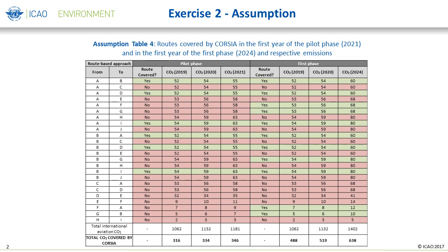Just as in the first exercise, there are only ten states in the CORSIA world, states A to J, along with the combination of international routes and routes which are covered by CORSIA or not, along with the levels of CO2 emissions on each route for the respective years. These can be found in Assumption Table 4 of the exercise.